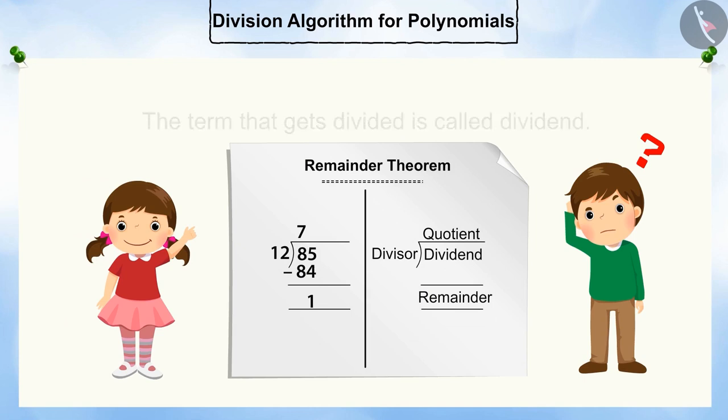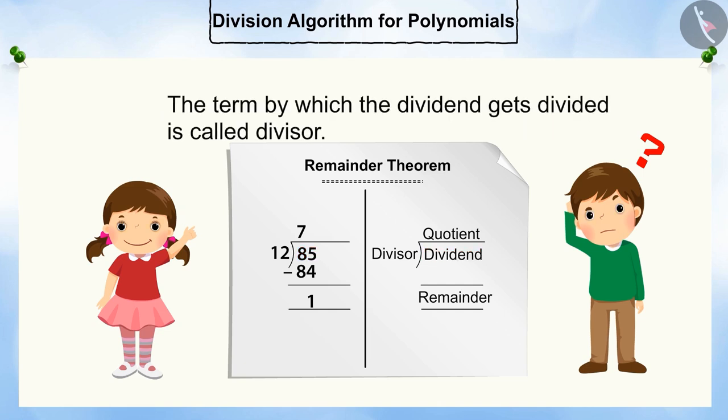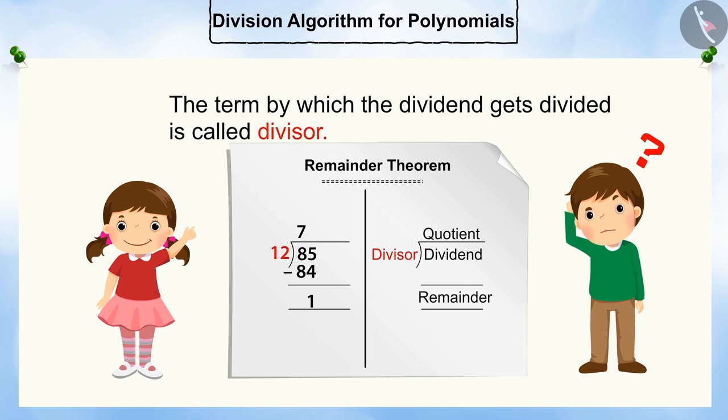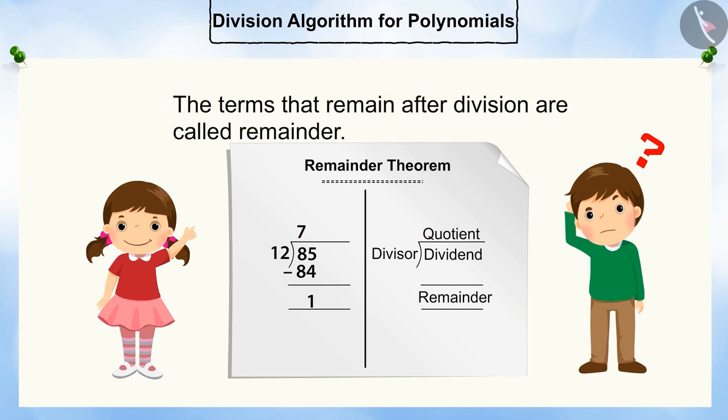Pooja tells Shyam that the term that gets divided is called dividend. And the term by which the dividend gets divided is called divisor. The number of times the divisor divides the dividend is called quotient. The term that remains after division is called remainder.